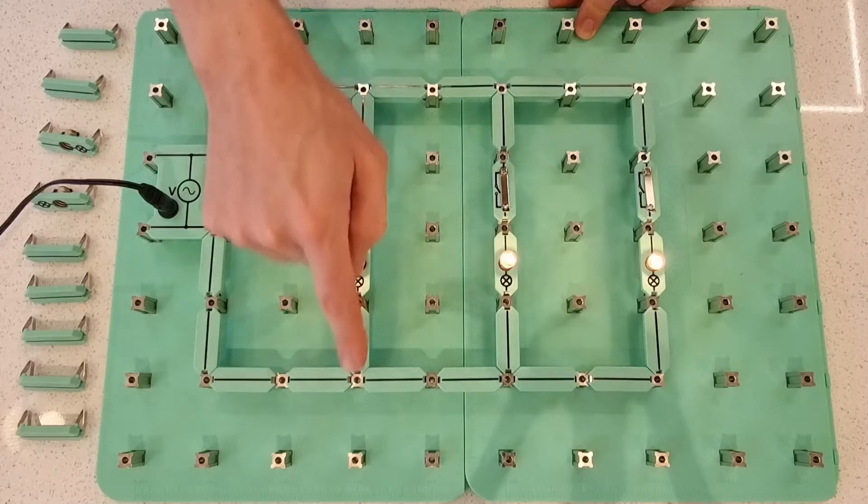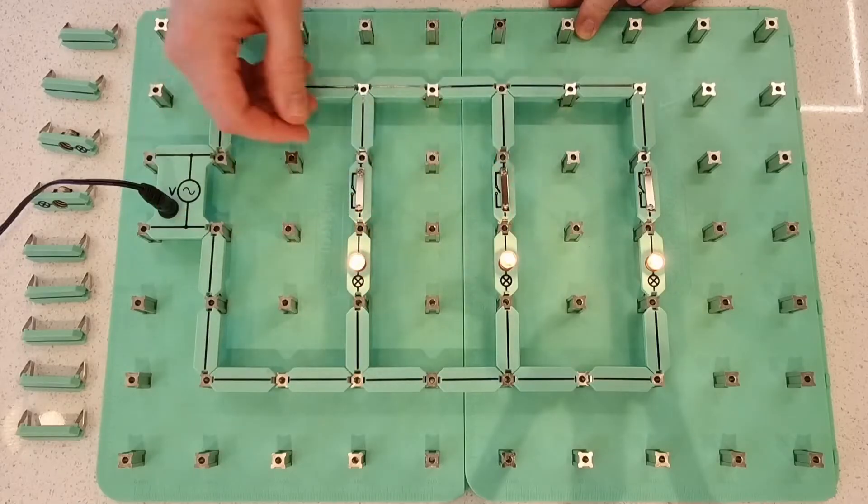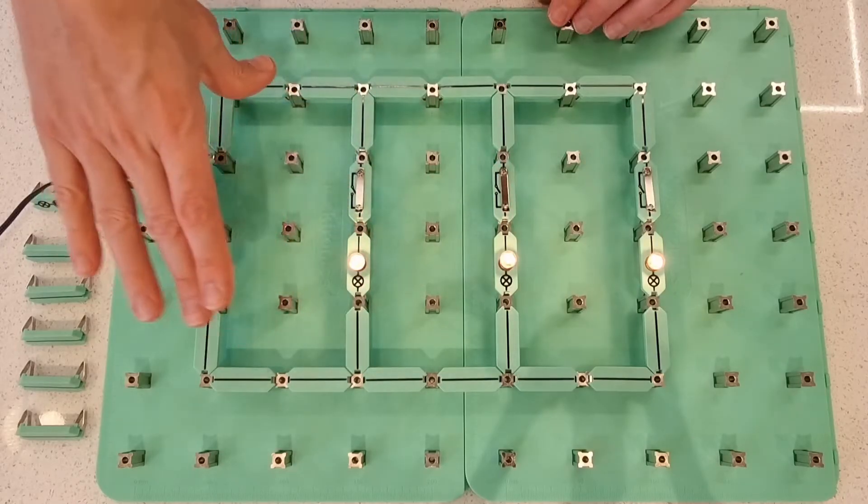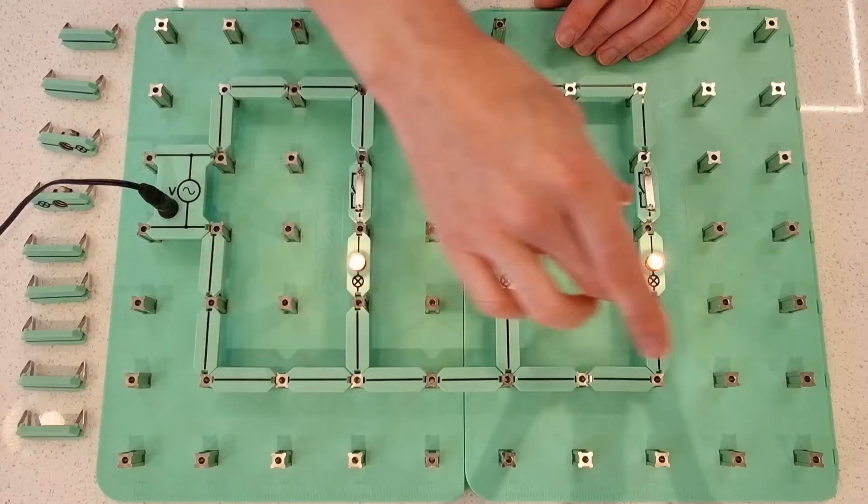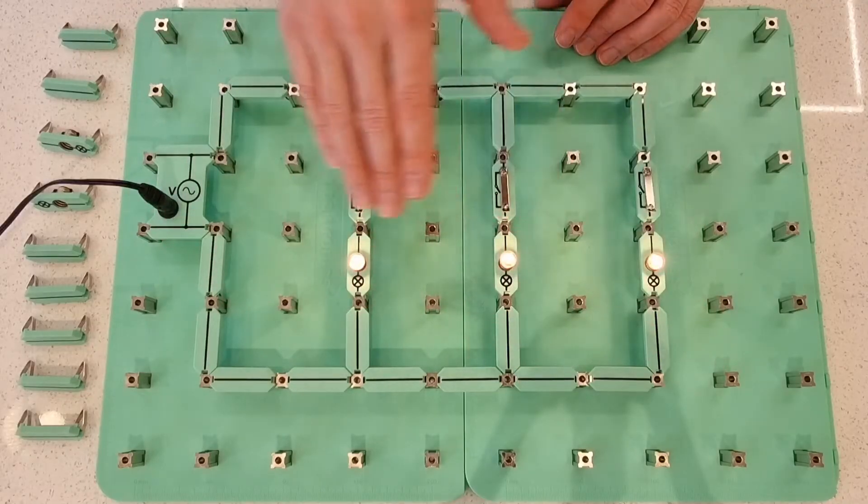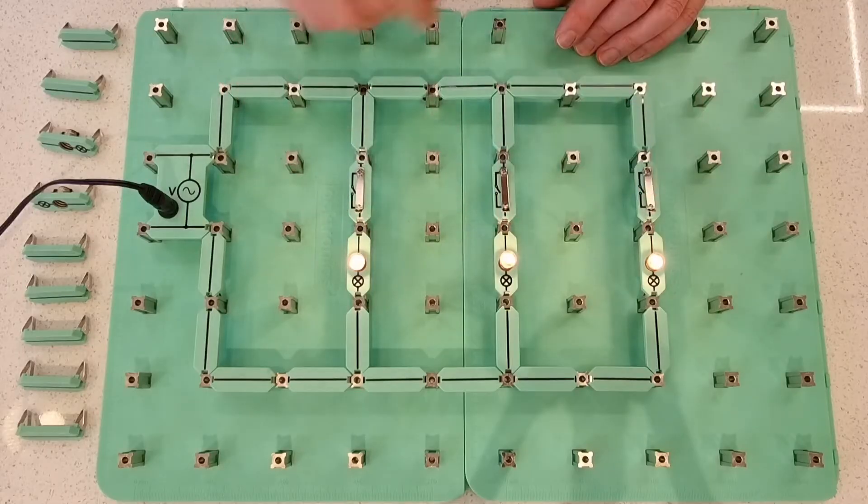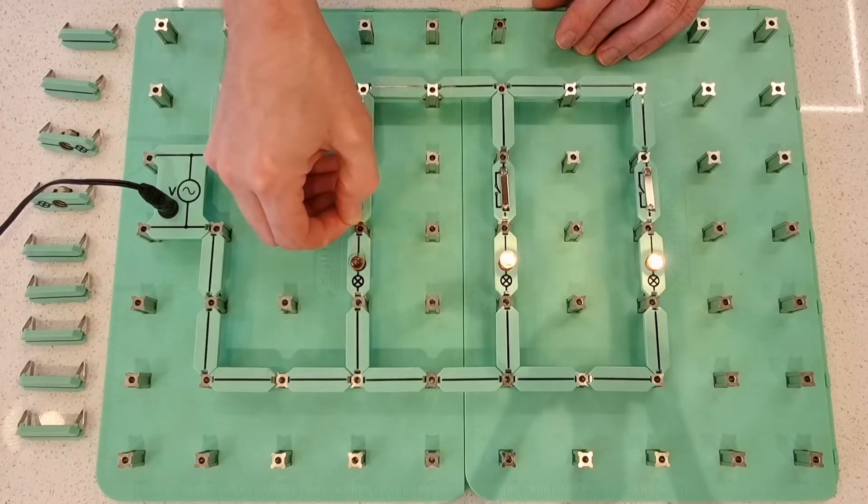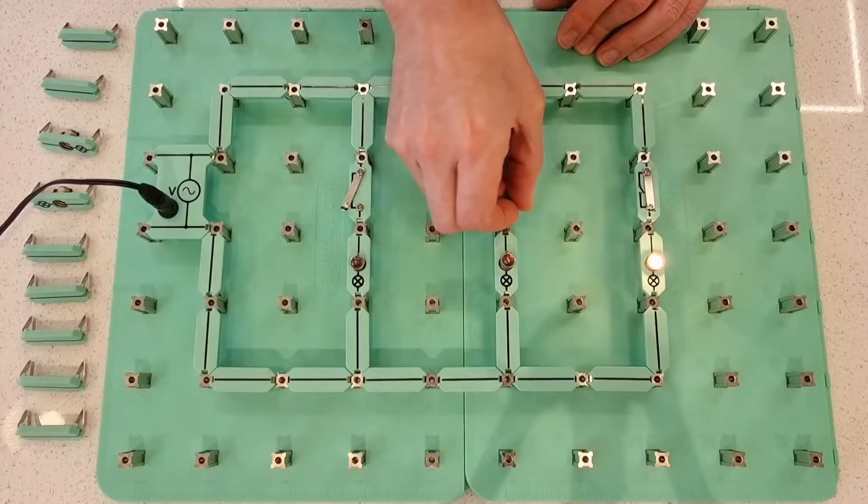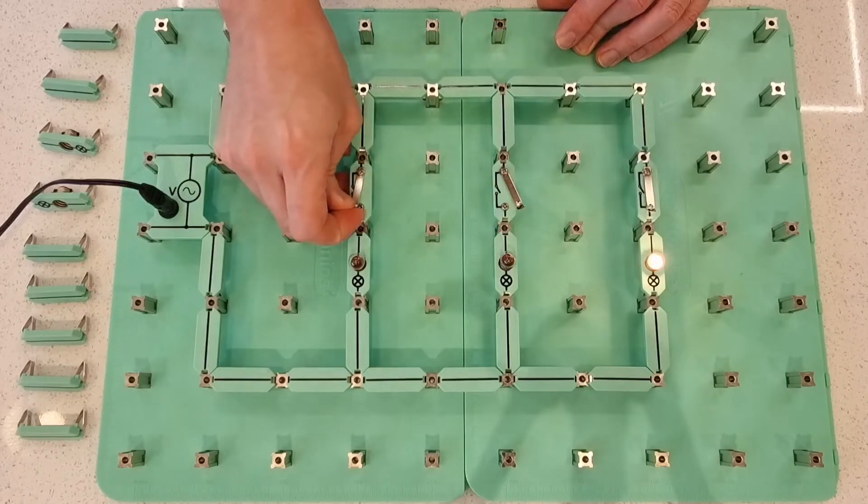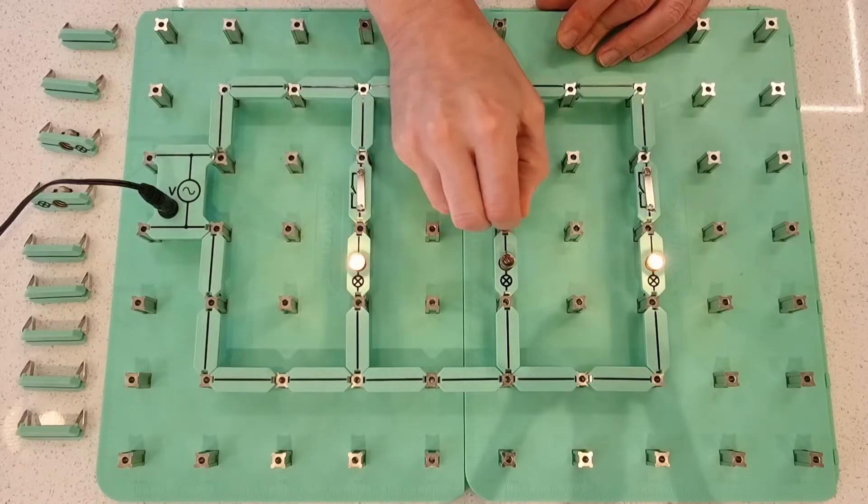The current doesn't have to flow through one of the loads to get to the next load. And that allows a couple of things. It allows us to have a constant voltage across each point in the circuit, which means that if the lamps have the same power rating, they'll continue to shine at the same level of brightness. And it also means that we can turn the lamps on and off as we want to without affecting the other lamps a crazy amount.